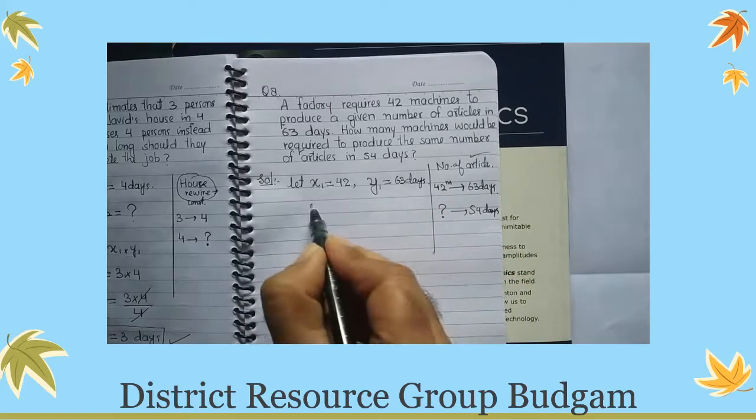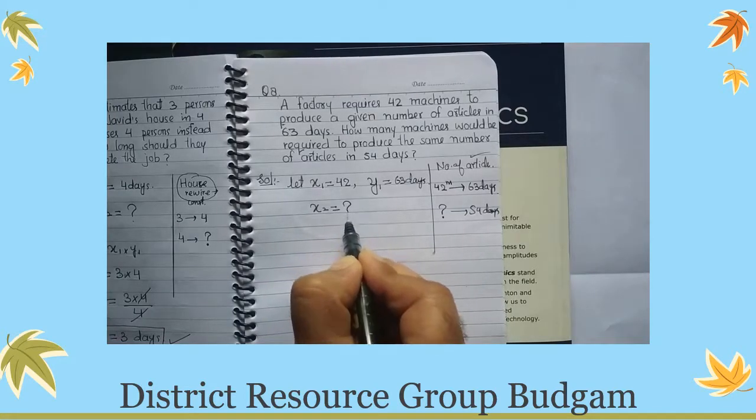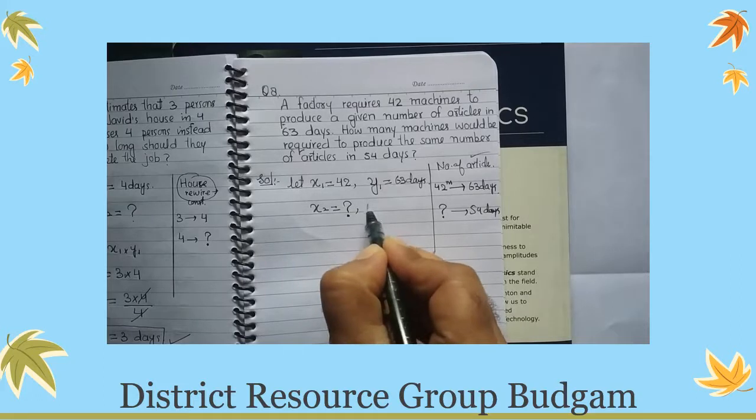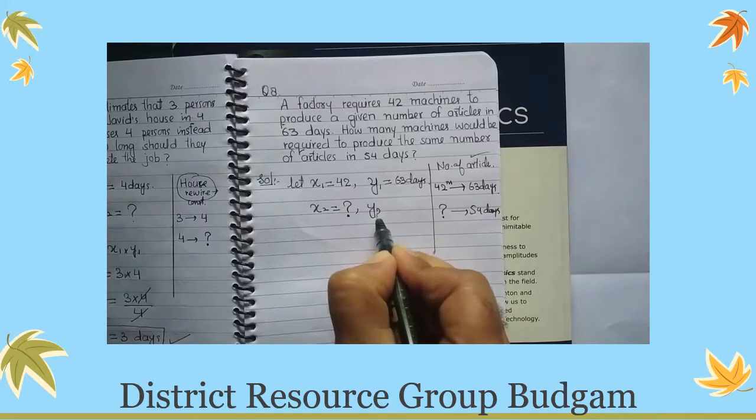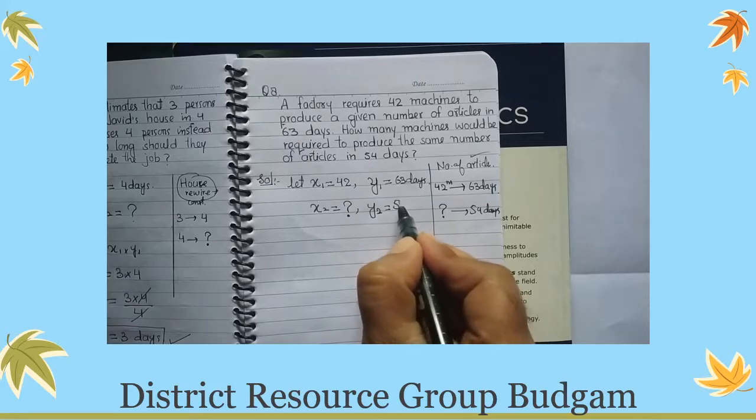And x2, number of machines jo hamein nikalna hai, kitni chahiye? To produce the same number of articles in how many days? 54 days.